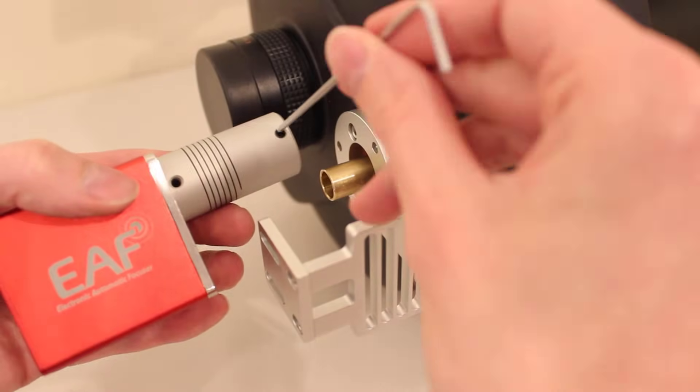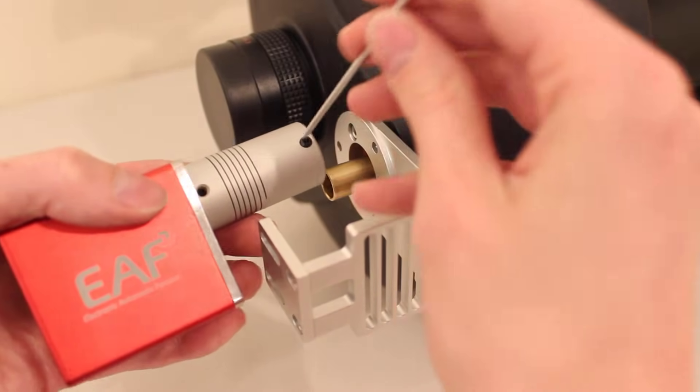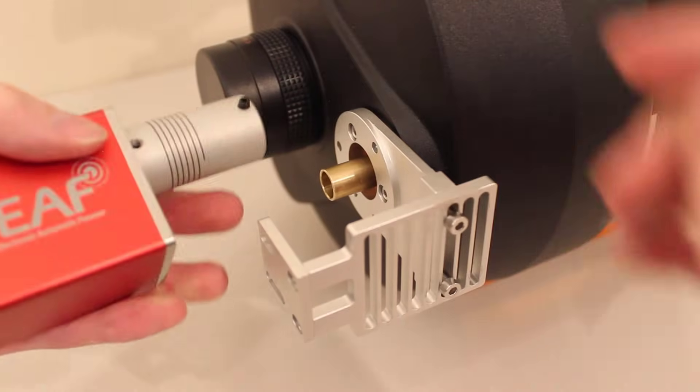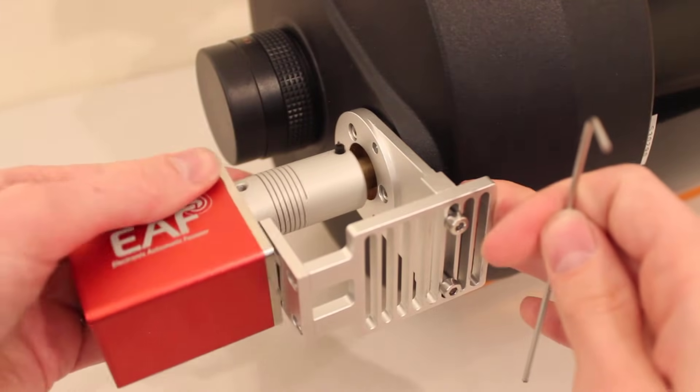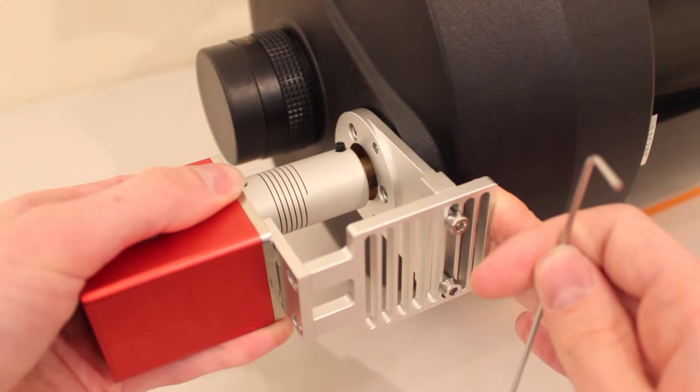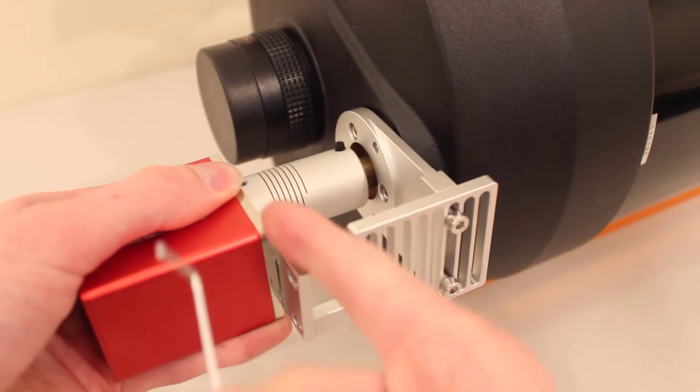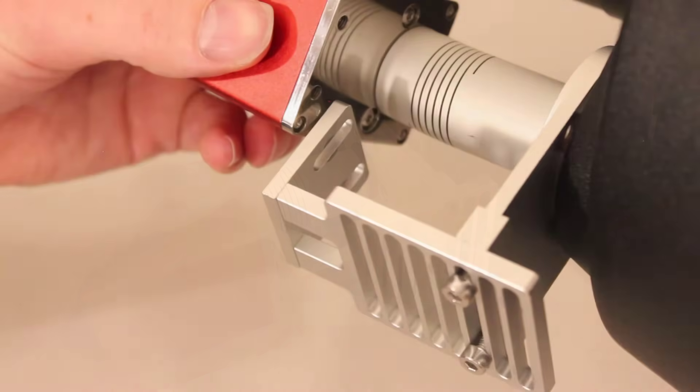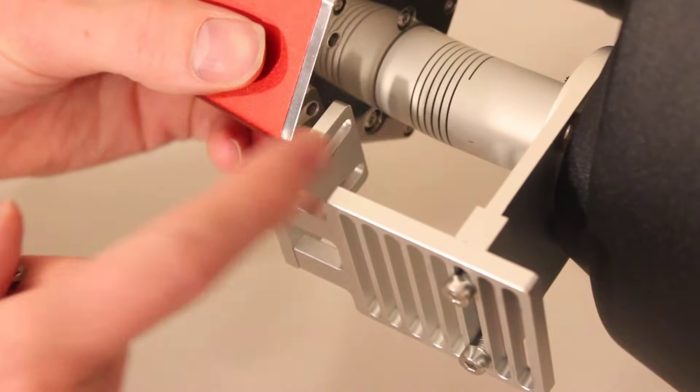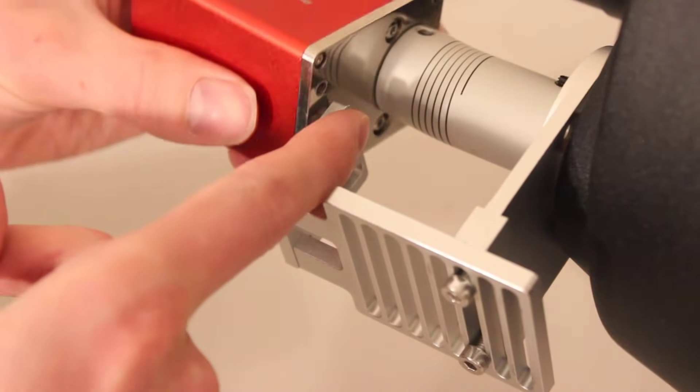Now I'm going to loosen the two grub screws that actually attach to the telescope focuser. Stick that over the top there, and you'll see now I have a much better fit. Everything is nice and even right here at the back. To finish things off, you're going to take the last two bolts that come with the kit, and you're going to secure the focuser to the bracket.